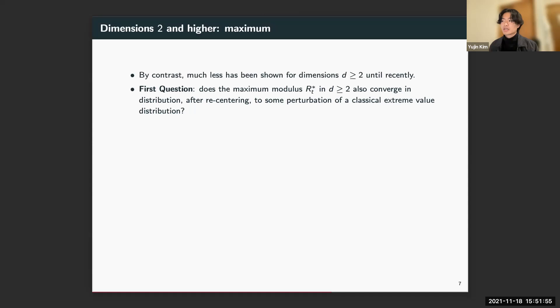In dimensions two and higher, there hasn't been much progress until recently. The first question we should ask ourselves is: does the maximum modulus converge in distribution after some recentering, where the recentering term needs to be computed? And further, in the spirit of this log-correlated philosophy, can we again identify the limiting law as some perturbation of a classical extreme value distribution?